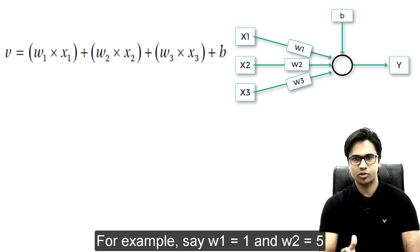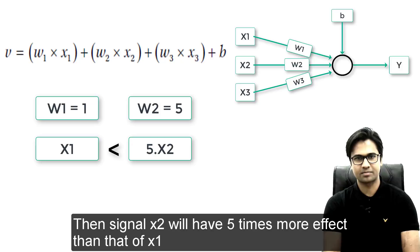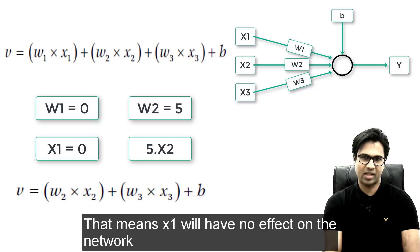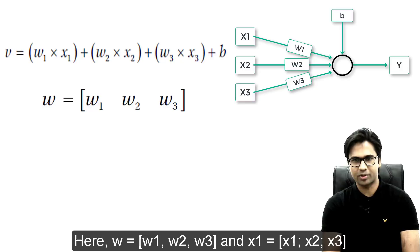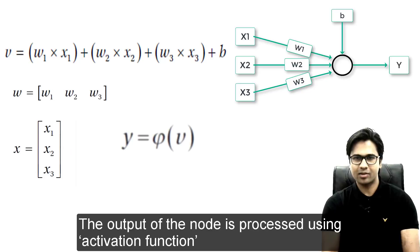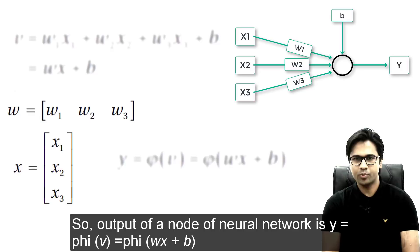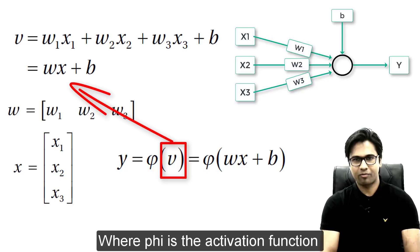This equation clearly shows that the higher the weight, the greater the effect. For example, say w1 equals 1 and w2 equals 5 — then signal x2 will have 5 times more effect than x1. If we assign w1 equals 0, then x1 will not be transmitted at all, meaning x1 has no effect on the network. We can write the weighted sum equation in matrix form, where w equals [w1, w2, w3] and x equals [x1, x2, x3]. The output of the node is processed using an activation function, which determines the behavior of a node. So the output is y = φ(v) = φ(Wx + b), where φ is the activation function.